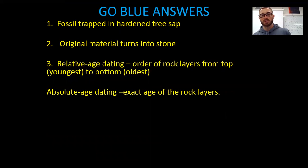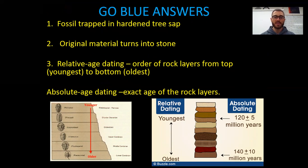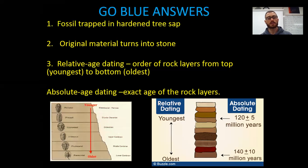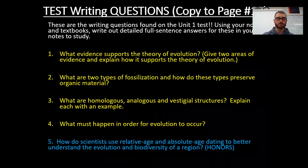A little more detail on number three — relative age dating versus absolute age dating. Relative age is just the order of the rock layers. Always know that the higher the rock layer is, the younger the fossil is, and the lower the fossil is, the older it is. Absolute age dating is going to be the exact age of the rock layers. Pause this video and make sure you've answered those questions on page 12 with your Go Blue questions.